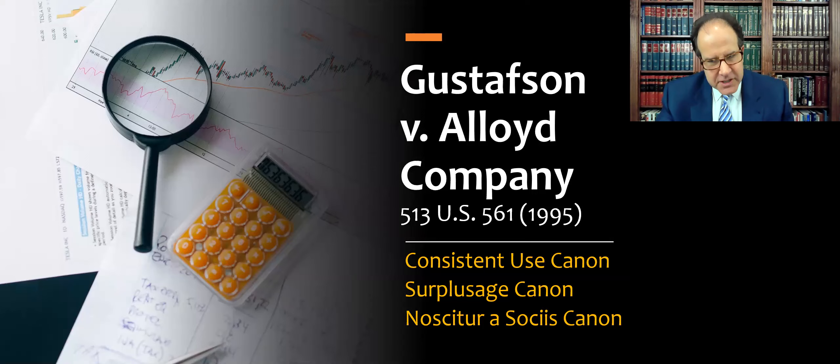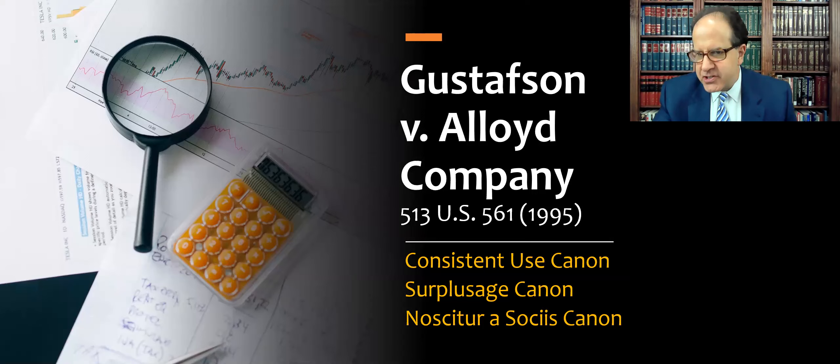We're going to talk about — we're studying this case to really learn about three traditional canons of construction, all in one case: the consistent use canon, the surplusage canon, and the noscitur a sociis canon.